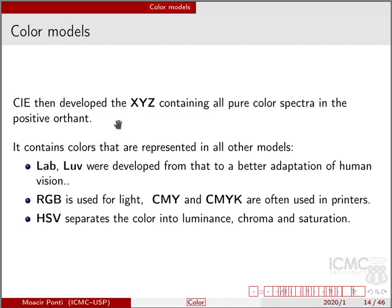It contains colors that are represented in all other models: the LAB, LUV that were developed later for better adaptation for human vision, also the RGB that's older than the XYZ but is an important system, CMY and CMYK often used in printers and for paint, and for example the HSV as well that separates color into luminance, chroma and saturation.